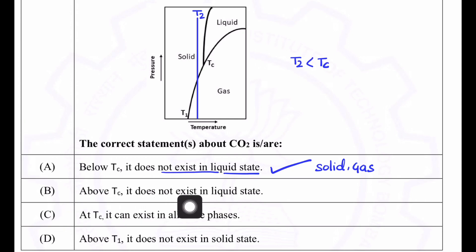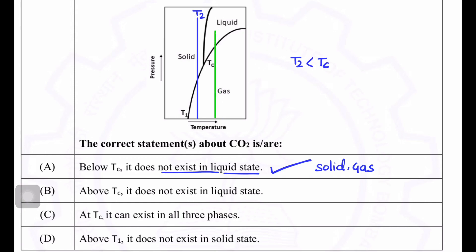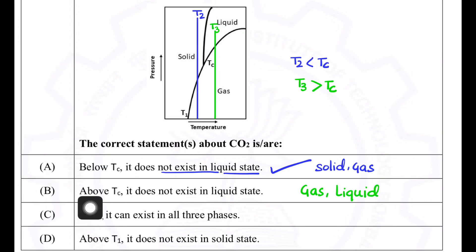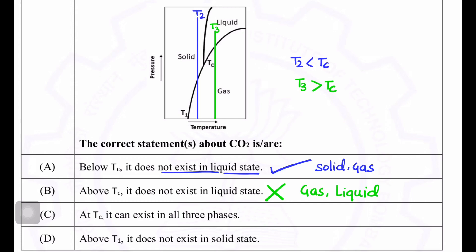Let me draw a vertical line at a temperature t3 greater than Tc. Above Tc, we can see that both gas phase and liquid phase are possible. So option B — which says it does not exist in liquid state above Tc — is incorrect.